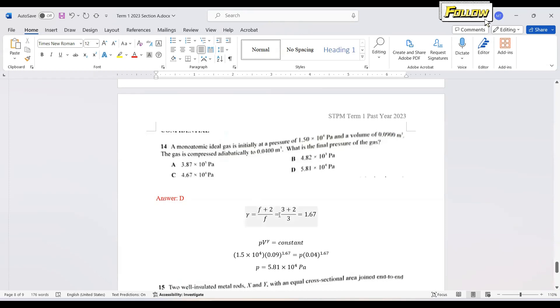So f is equal to 3. So the gamma, the ratio is 1.67. Apply the ratio formula that we have the PV to the power of gamma. Do the calculation and you should able to obtain the pressure is 5.81 times 10 to the power of 4 Pascal. Answer is D.